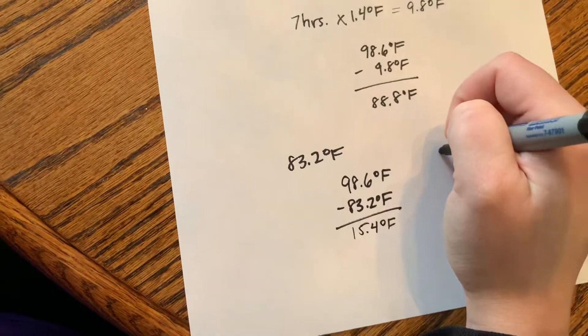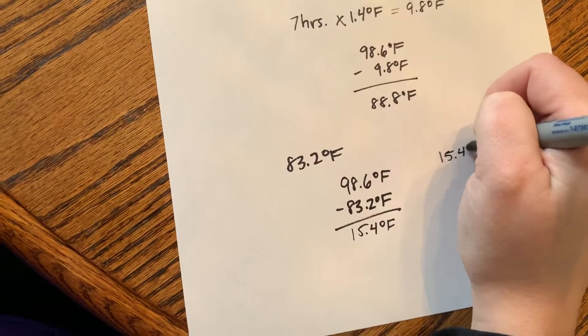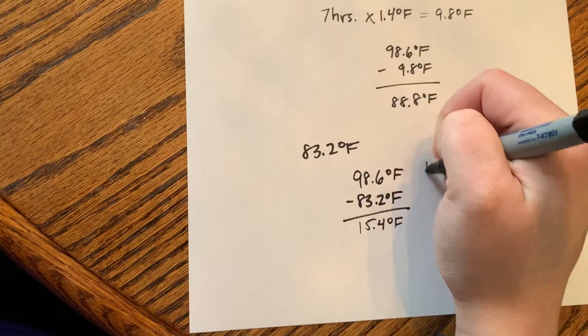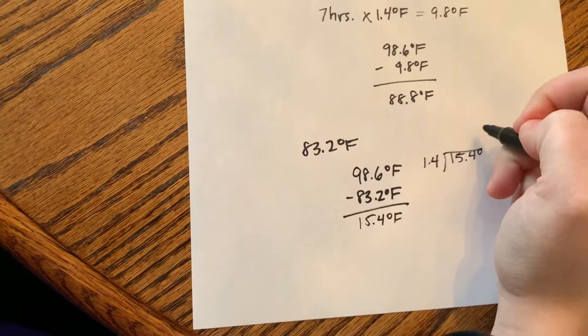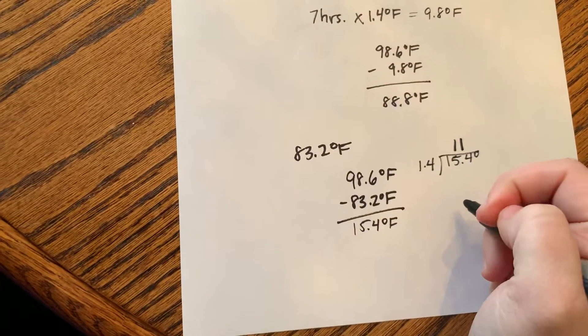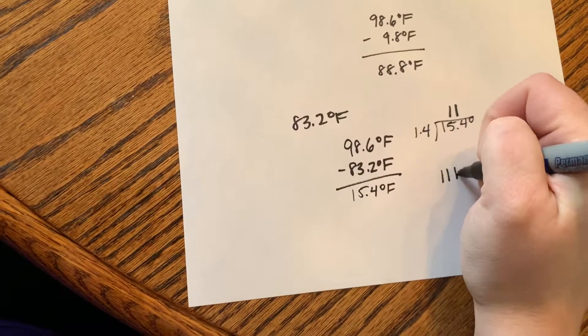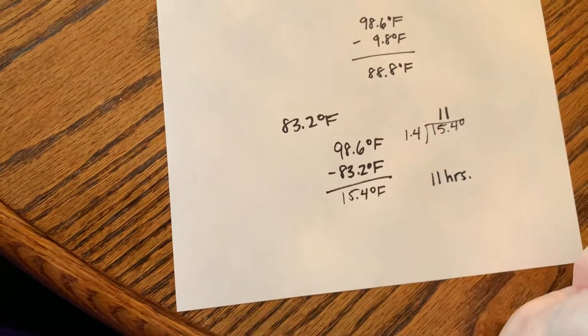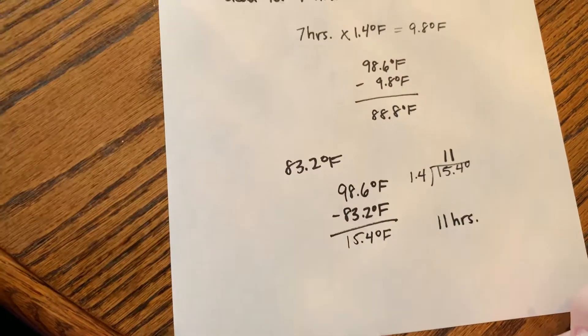Now we're going to divide 15.4 degrees by our rate of 1.4, which gives us 11 hours. So that person has been dead for 11 hours. Hopefully this helps.